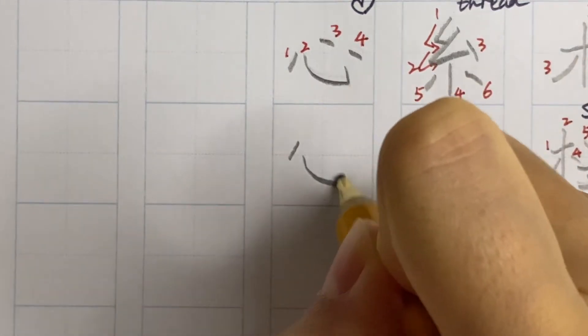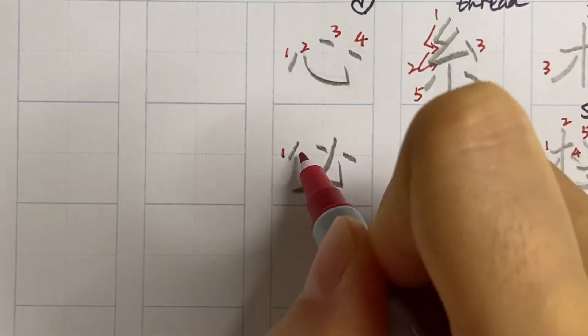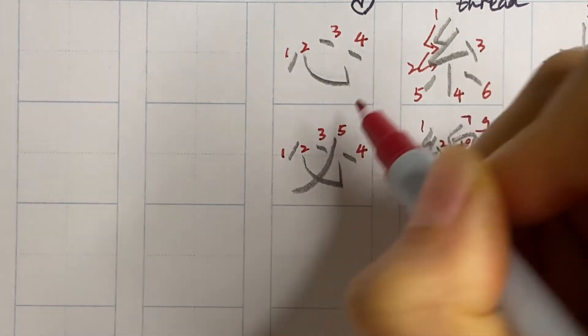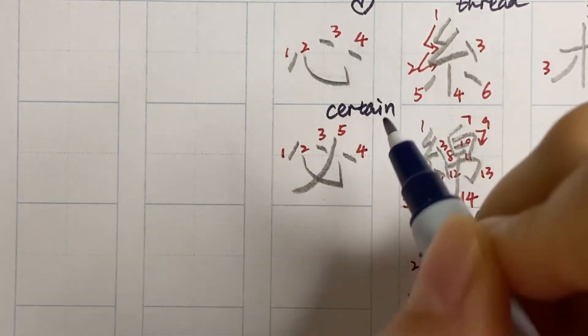An example kanji is: draw the heart first and then one stroke across the heart. And that is kanarazu: always, without exception, certainly, without fail.